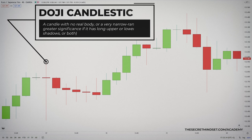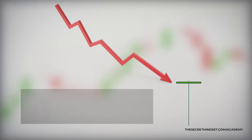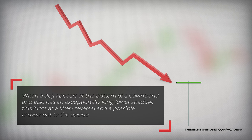The candle with no real body or a very narrow range — one in which the open and close are the same — represents a significant development. The fact that price opens and closes at the same place has greater significance when the doji also has exceptionally long upper or lower shadows, or both. The longer shadows reveal an attempt by buyers or sellers to move price in the desired direction. However, the effort failed when the price retreats to close at the same price as the open. The meaning of the failure on one side or the other, or on both sides, affects how the current trend is viewed and what it means in terms of the likely reversal. For example, when a doji appears at the bottom of a downtrend and also has an exceptionally long lower shadow, it shows that sellers tried to move price lower but couldn't. This hints at the likely reversal and a possible movement to the upside.